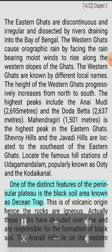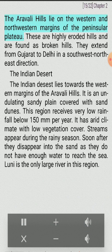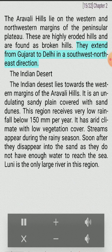One of the distinct features of the peninsular plateau is the black soil area known as Deccan Trap. This is of volcanic origin, hence the rocks are igneous. These rocks have been denuded over time and are responsible for the formation of black soil. The Aravali Hills lie on the western and northwestern margins of the peninsular plateau. These are highly eroded hills found as broken hills, extending from Gujarat to Delhi in a southwest to northeast direction.